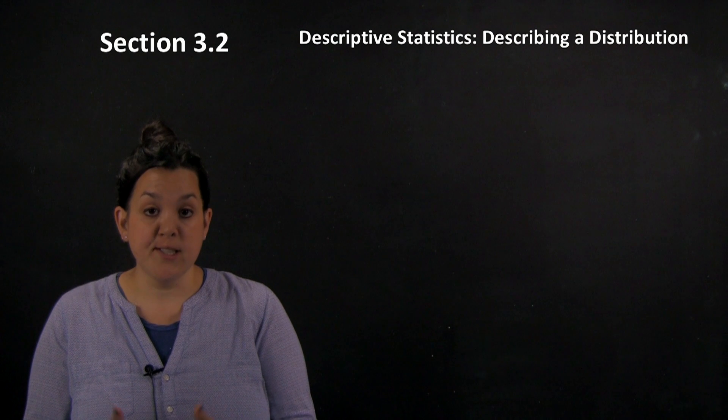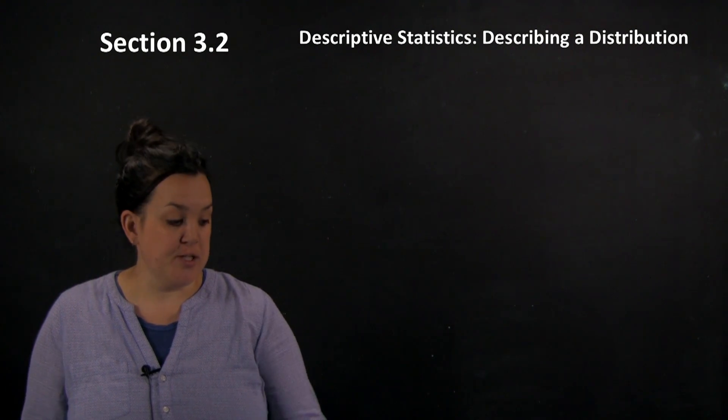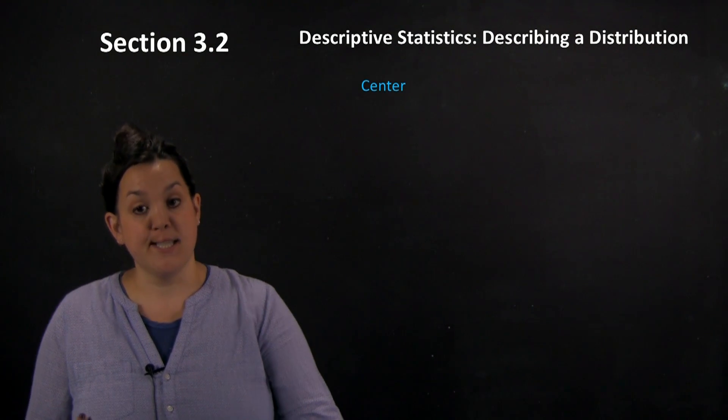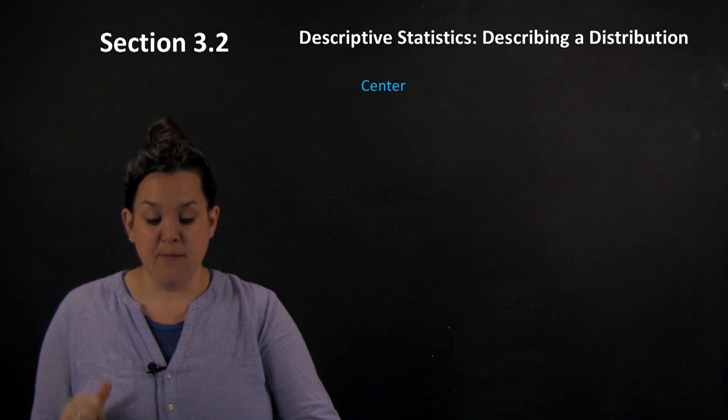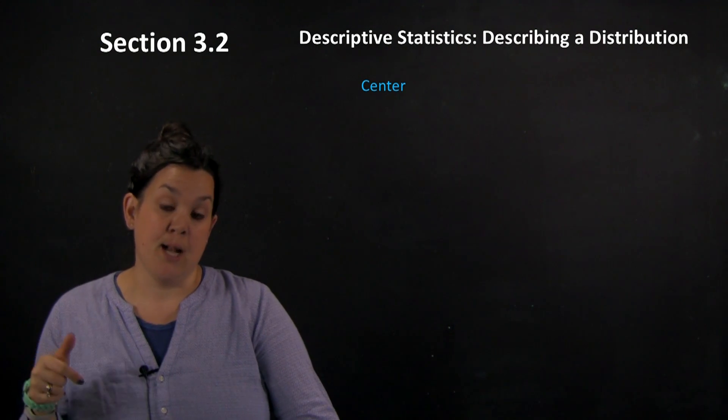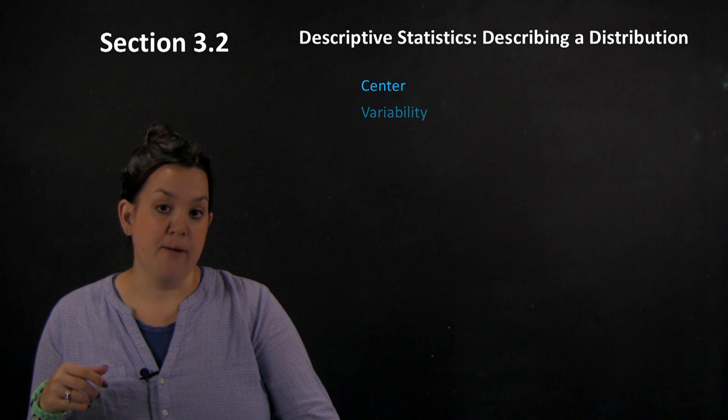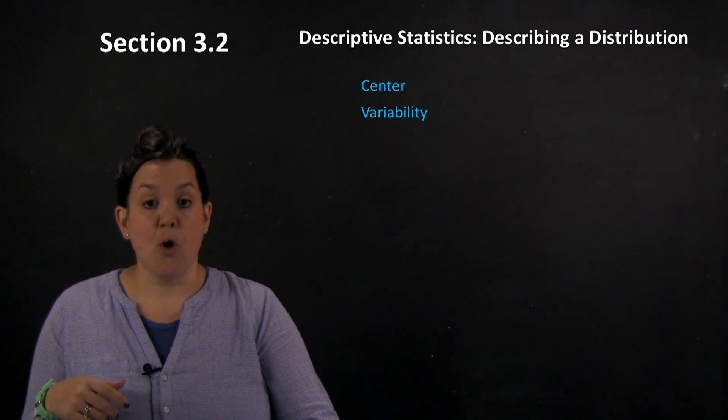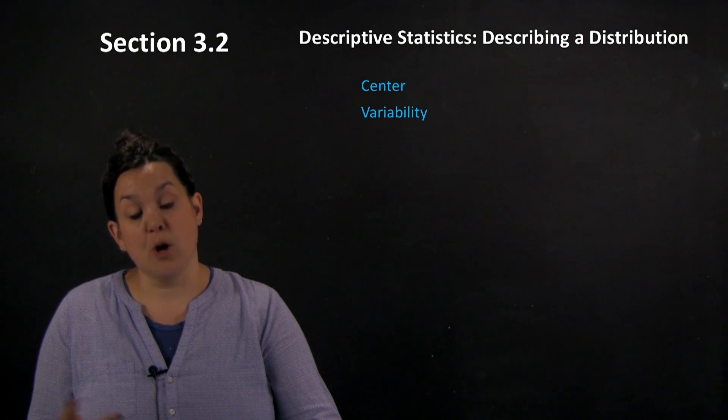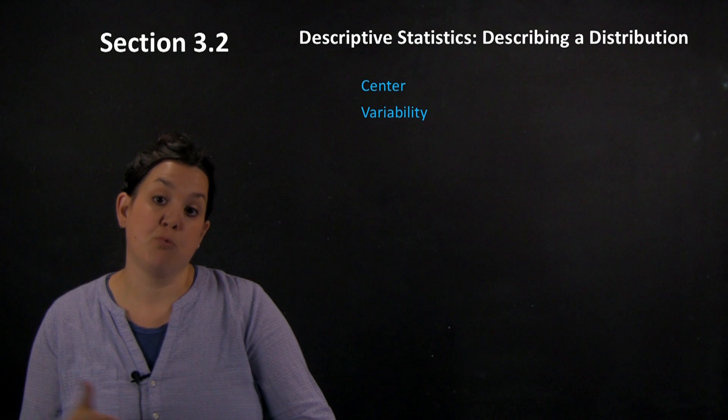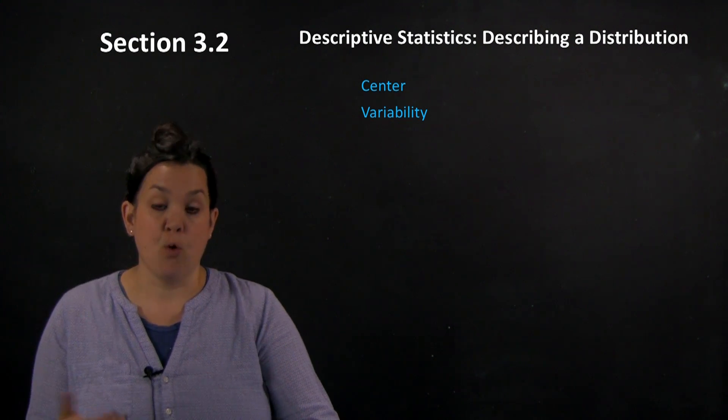There are four areas that you want to talk about when you're describing a distribution. The first one is the center. Center is just as it sounds—you want to identify where the data is split in half. The next one that we have is variability. Variability is going to describe for quantitative data how much spread there is in the data set or in the distribution.